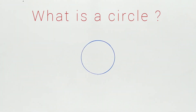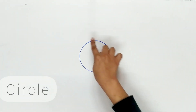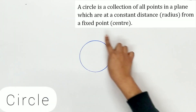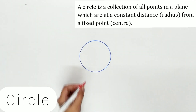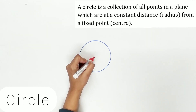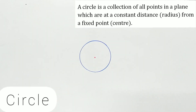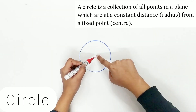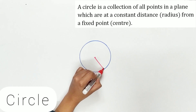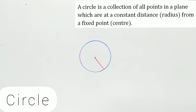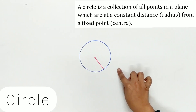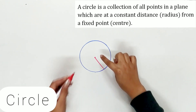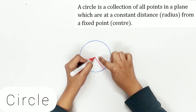So what is a circle? A circle is a collection of all the points in a plane which are at a constant distance — that is, the radius — from a fixed point called the center. That means all the points on a circle are at a fixed distance from the center of the circle.